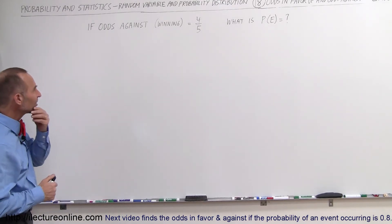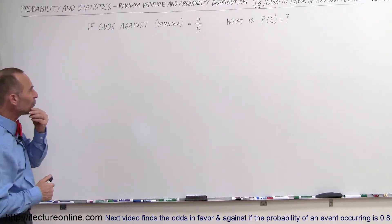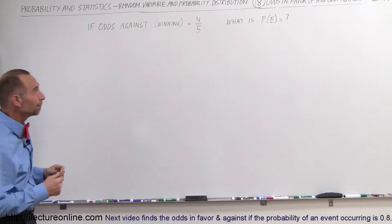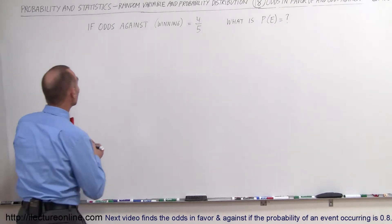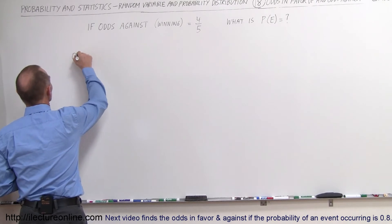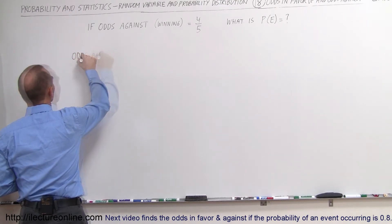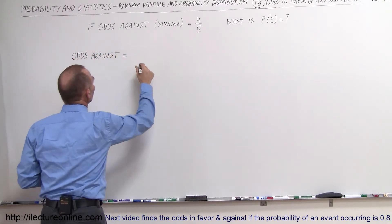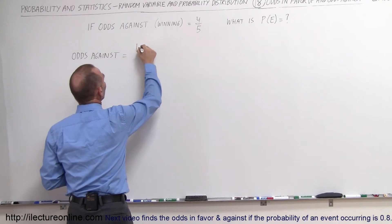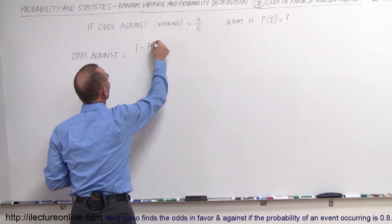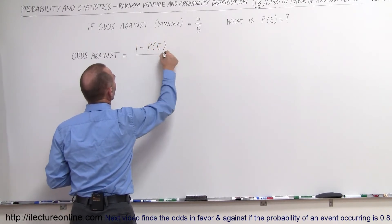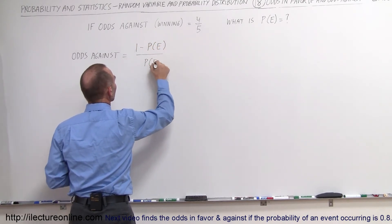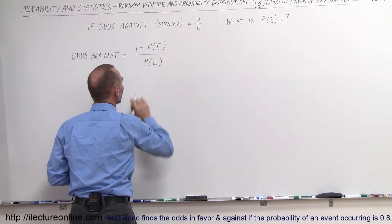So if the odds against are four-fifths, is that good or is that bad? Let's find out. The equation says that odds against is equal to 1 minus the probability of the event occurring, divided by the probability of the event occurring — and that's what we're looking for.